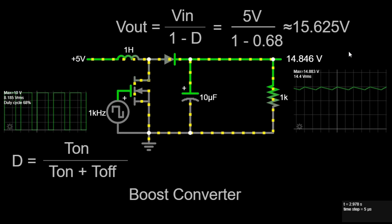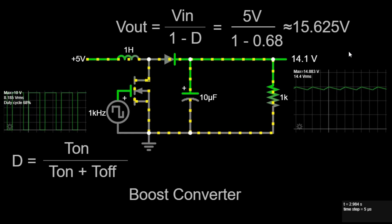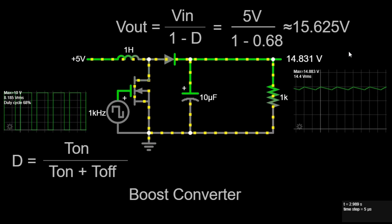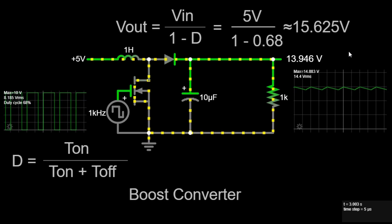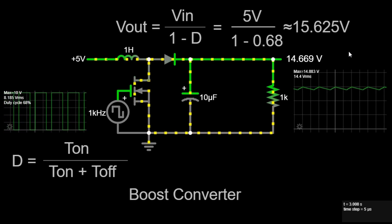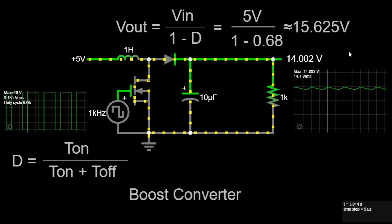Second, Switching Frequency: Higher switching frequencies allow for smaller inductors and capacitors but increase switching losses. The switching frequency must be chosen to optimize efficiency while keeping component sizes manageable.